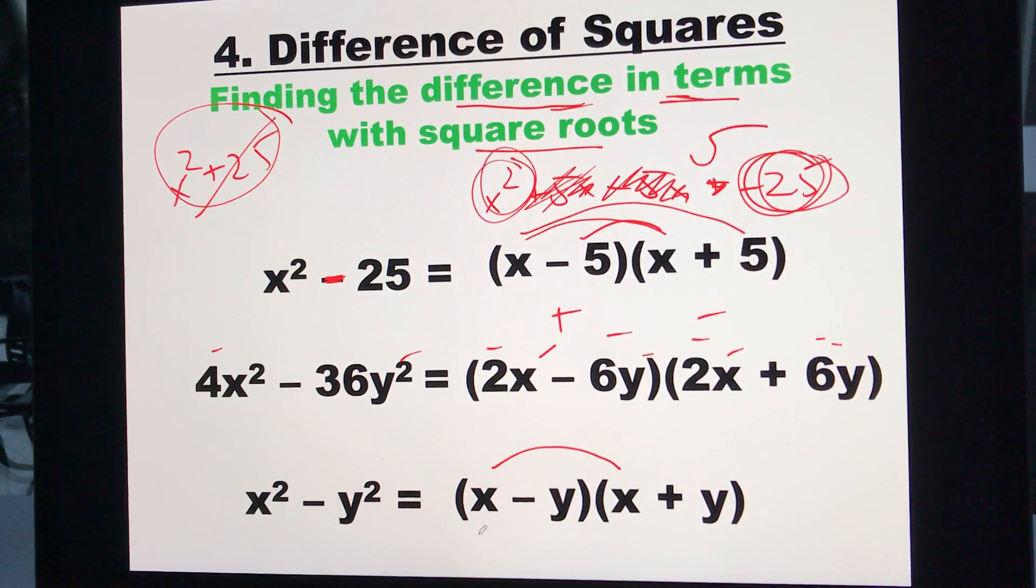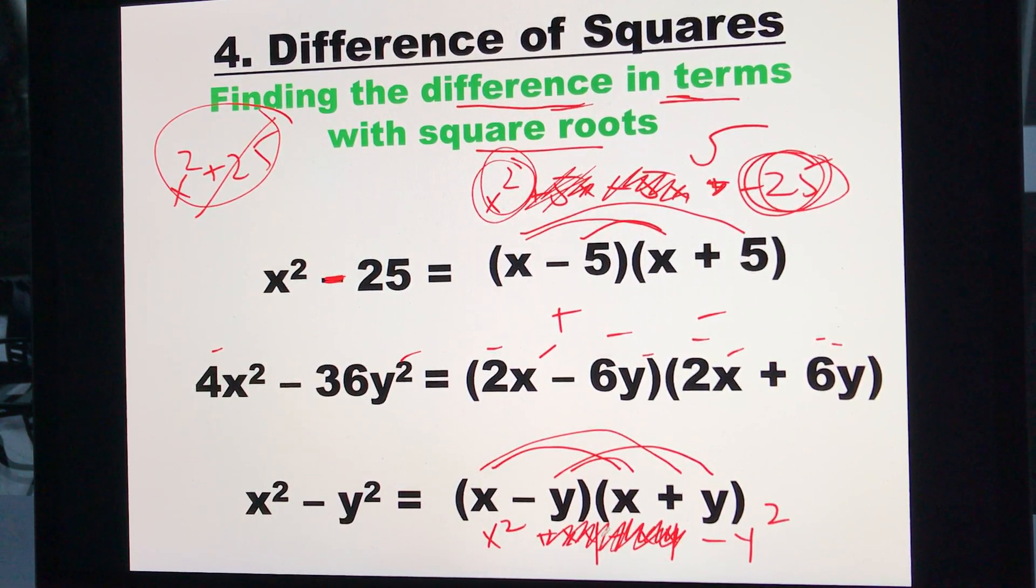x times x is x squared. x times y is plus xy. Negative y times x is negative xy. Negative y times positive y is negative y squared. The plus xy and negative xy go to zero. And I'm left with x squared minus y squared, which is that.